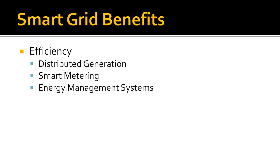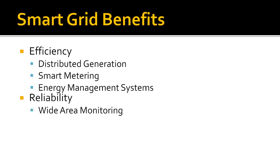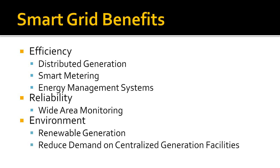There are many benefits to a smart grid. Efficiency will be increased with distributed generation, smart metering, and energy management systems. Distributed generation will reduce transmission line losses and enable heat capture for heating purposes. Smart metering will enable energy management systems to control load to run during off-peak periods. Reliability will be improved with wide area monitoring and protection systems, providing constant detection of disturbances at any portion of the grid and the capability to localize, evaluate, and react in real time to diminish or neutralize problems. The environment also benefits as renewable sources such as solar and wind can be utilized in residential applications, helping countries meet their Kyoto Protocol commitments. Reducing demand on centralized generation facilities will also reduce the amount of emissions produced.